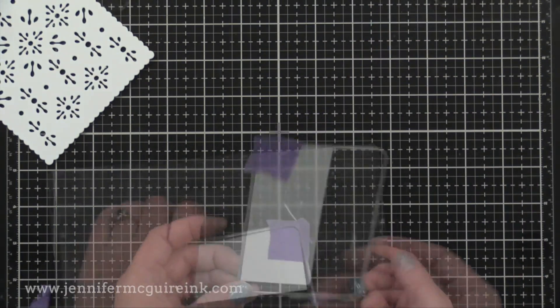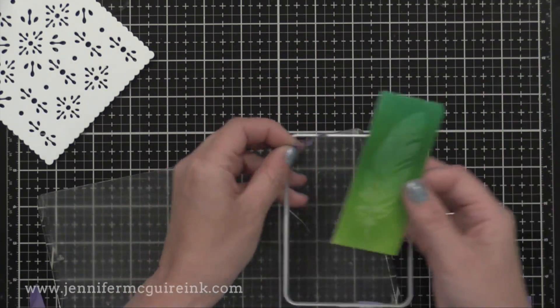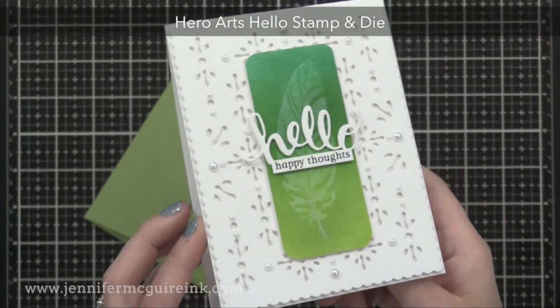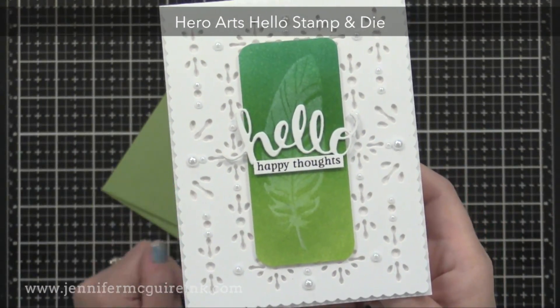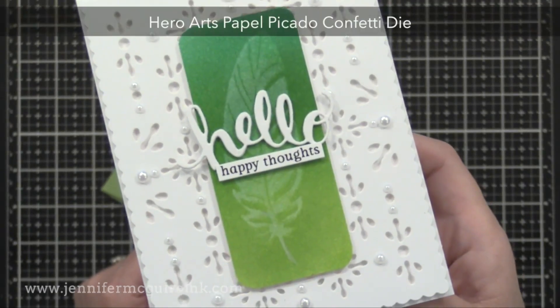I couldn't find my corner rounder, so I'm actually using my rounded rectangle die to round each corner by placing it right into the corner of the die and running it through my die cut machine four times. I added that to a card with a background die. This background die is another new one from Hero Arts.